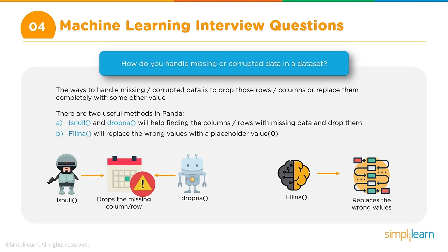Feature engineering involves deciding which of potentially 50 or 100 data columns — representing features — to include in the model. In regular machine learning, we manually identify and eliminate non-contributing features. In deep learning using neural networks, the model automatically determines which features to use, so feature engineering is done automatically.